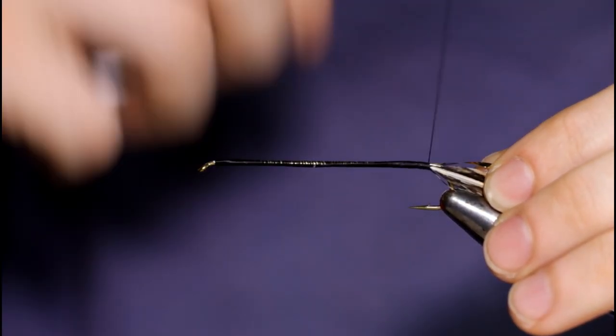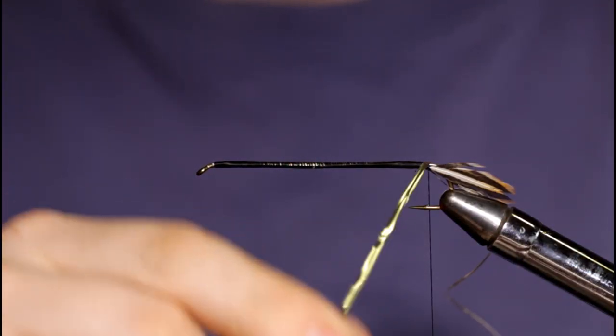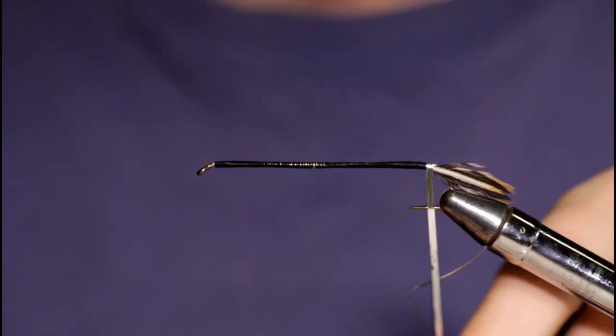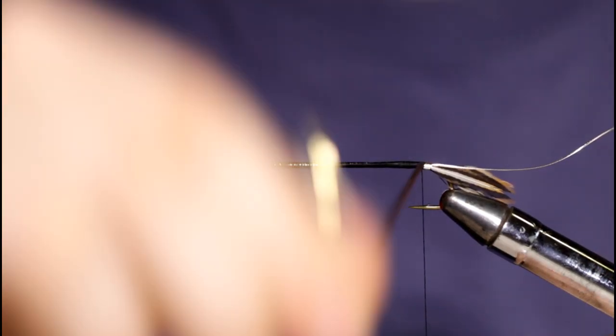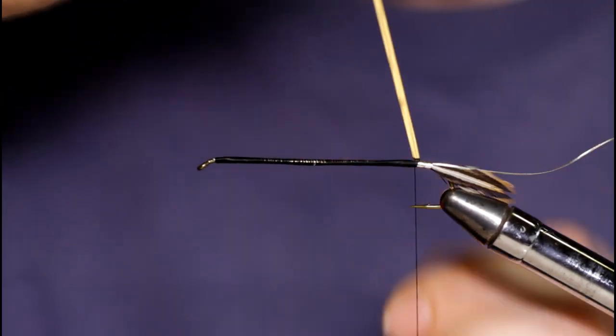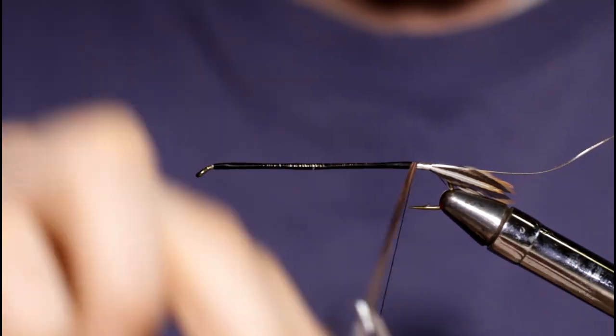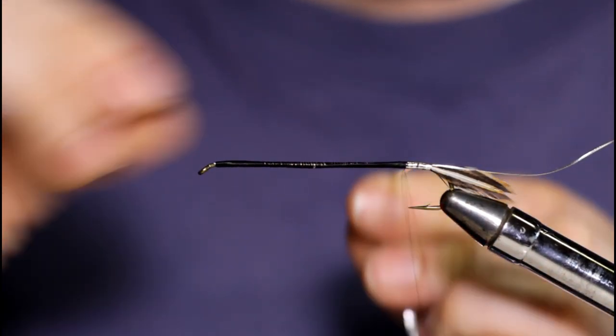All right. So just wrap underneath and around that thread. You can see the thread will move with the tinsel here. I'm just going to wind this forward, touching turns as even as you can get them.